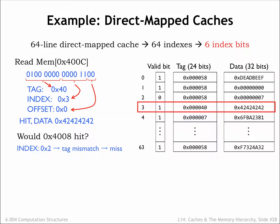Would an access to location 4008 be a cache hit? This address is similar to our first example, except the cache line index is now 2 instead of 3. Looking in cache line 2, we see that its tag field, 58, doesn't match the tag field in the address, 40, so this access would be a cache miss.